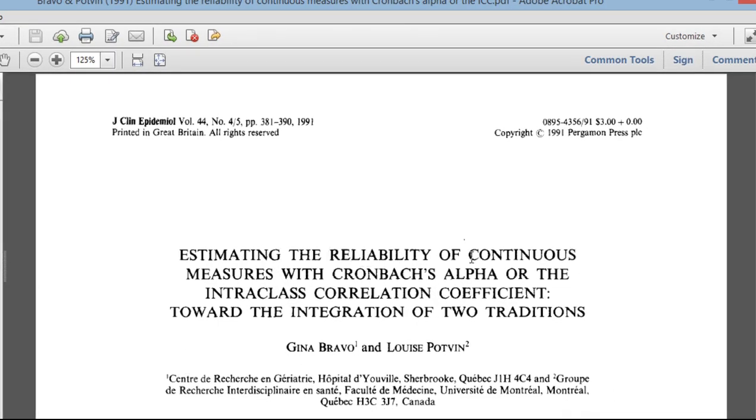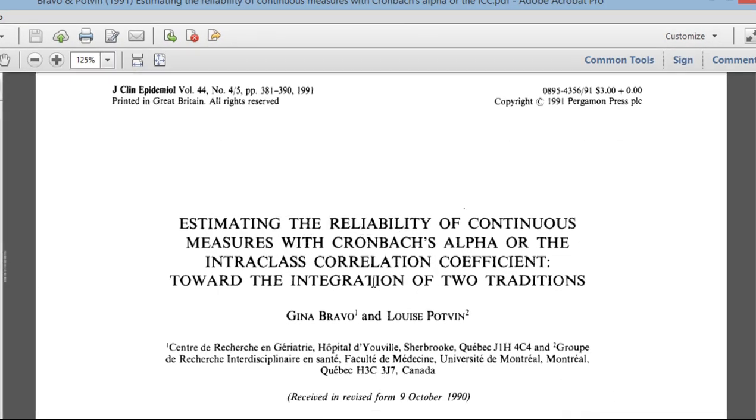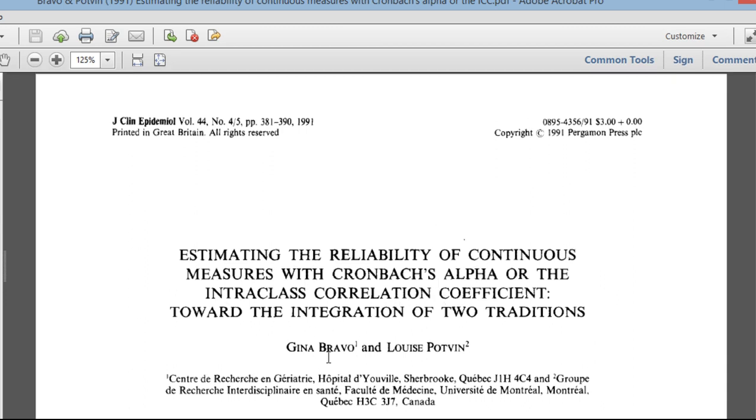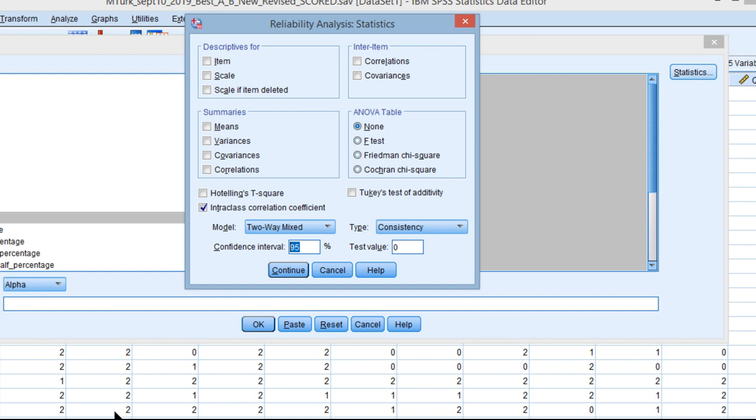Estimating the Reliability of Continuous Measures with Cronbach's Alpha or the Intraclass Correlation Coefficient. In this paper by Bravo and Potfang, 1991, they specifically say that estimating Coefficient Alpha, Cronbach's Alpha, with the Intraclass Coefficient, two-way mixed, is exactly the same as Coefficient Alpha.